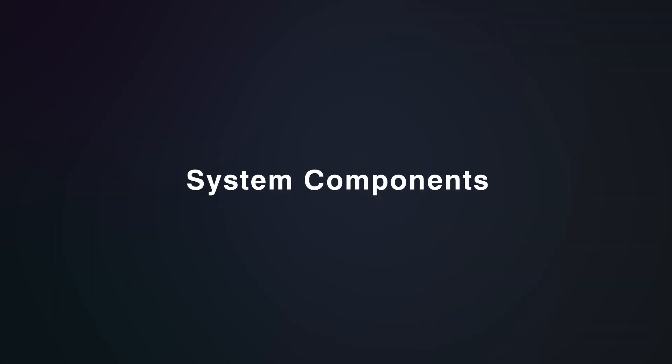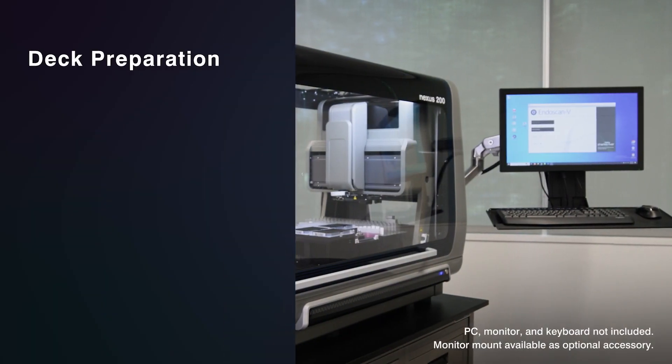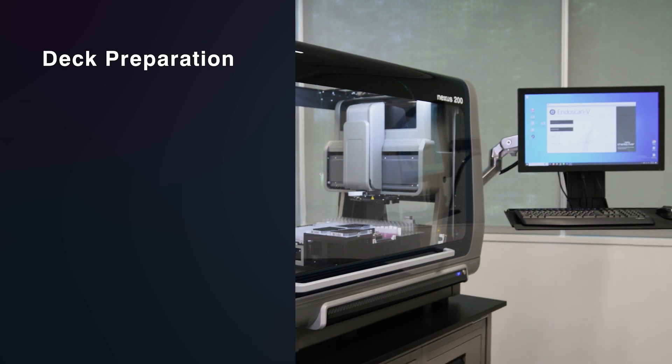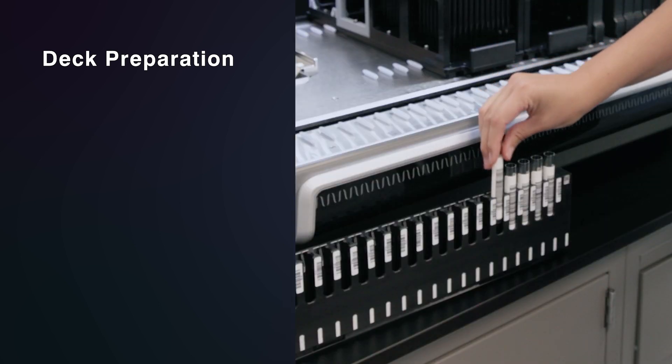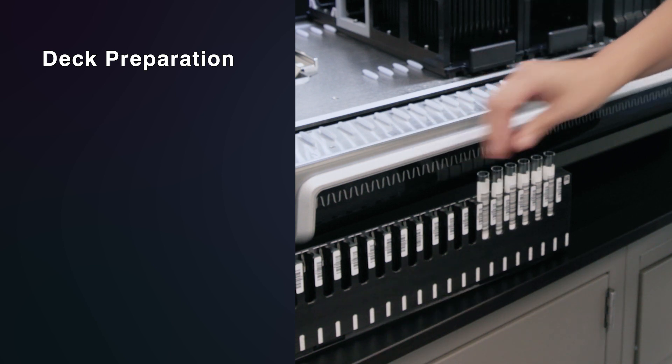The Nexus 200 allows for simple preparation and setup in a few steps. To begin, power on the Nexus 200, log in to the EndoScan-V software. The door can be opened and samples can now be prepared and loaded into the racks.